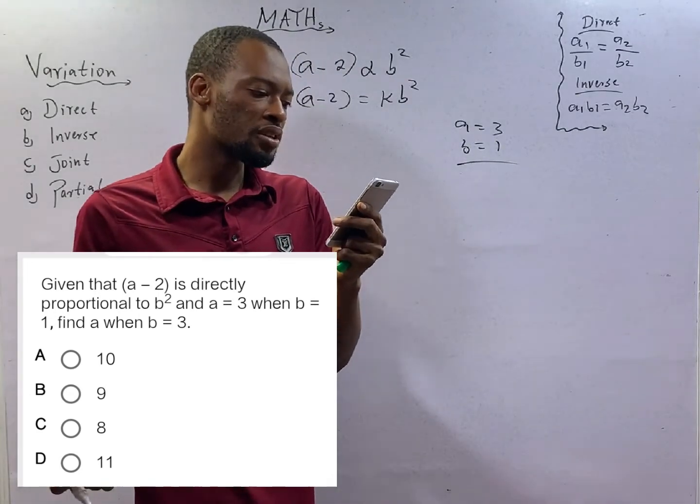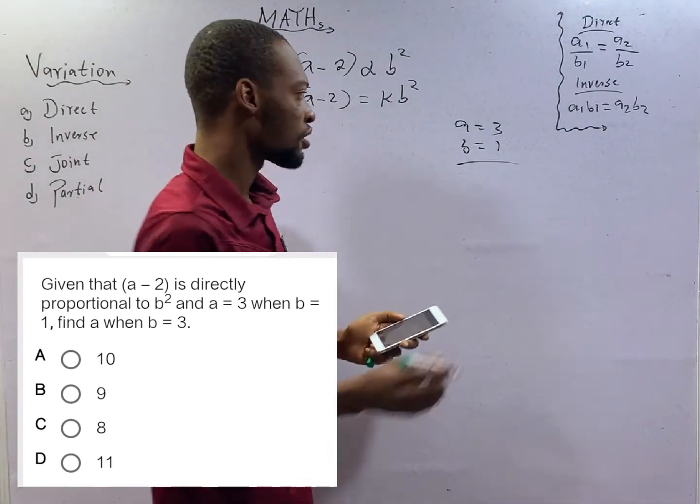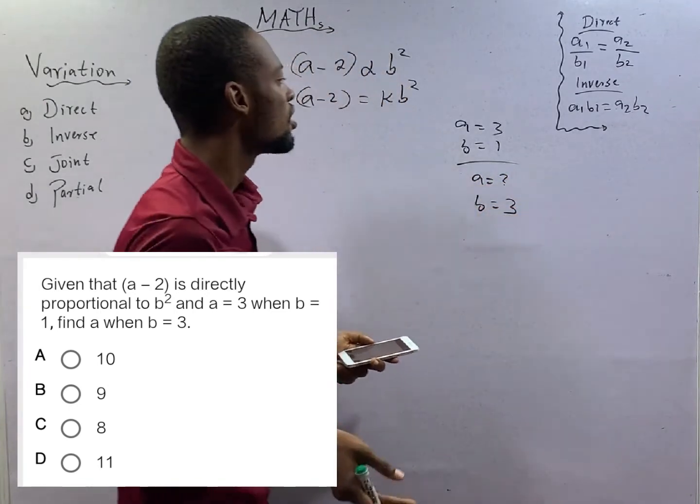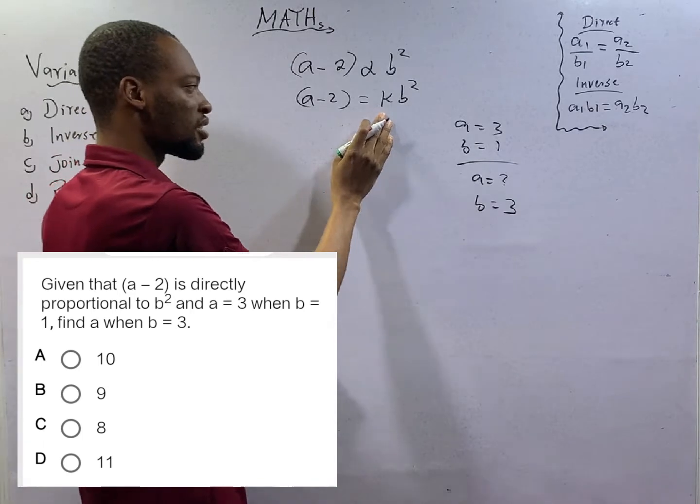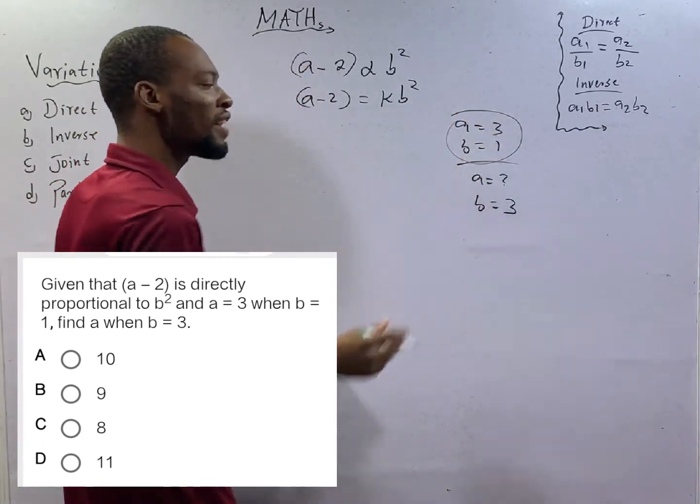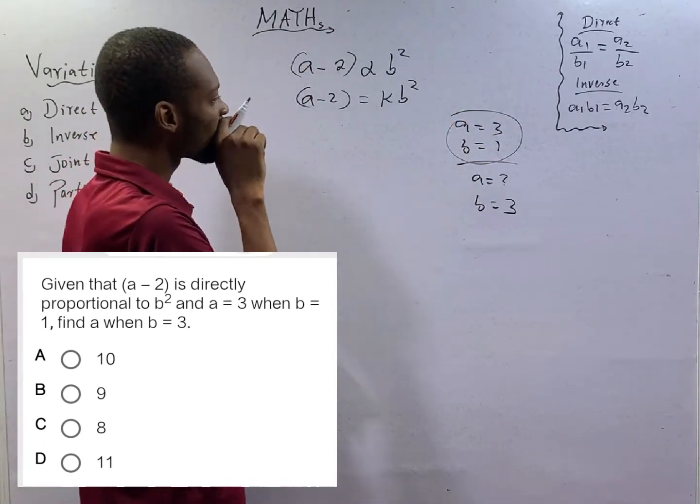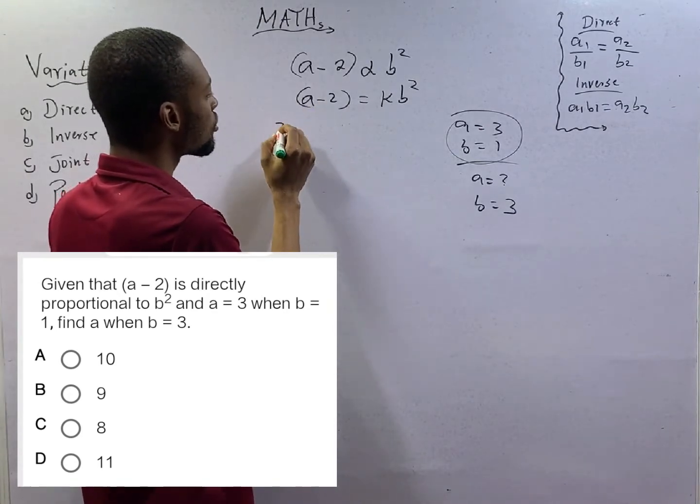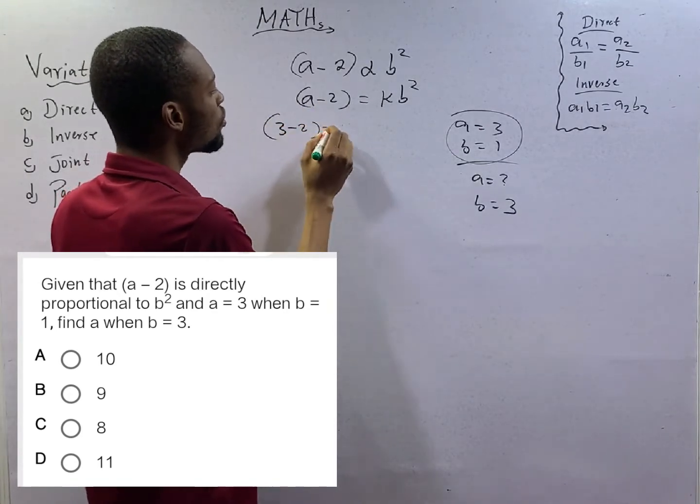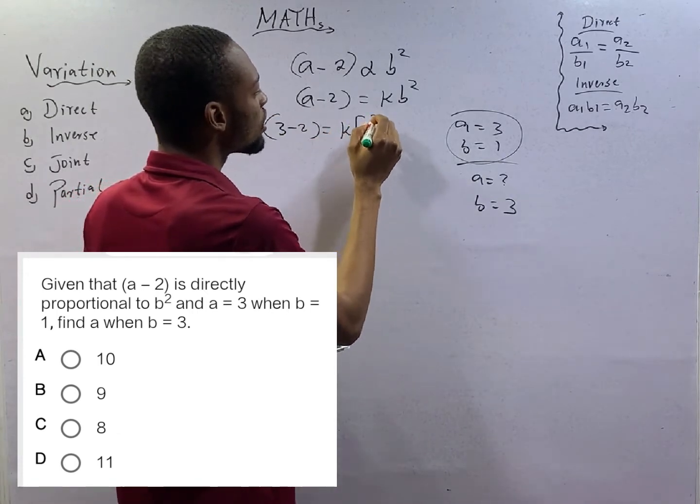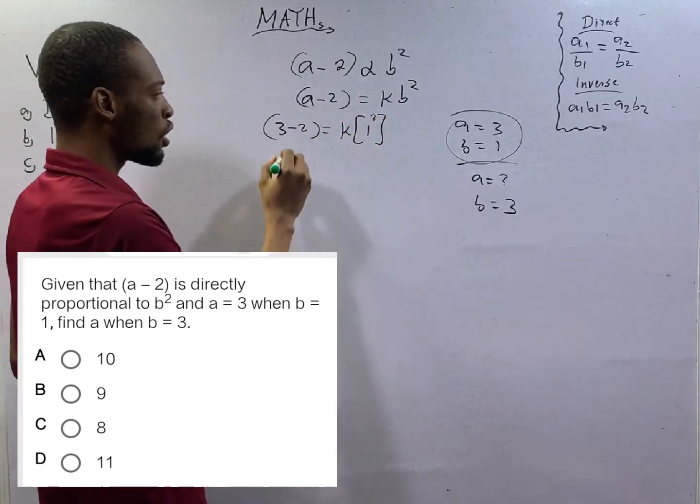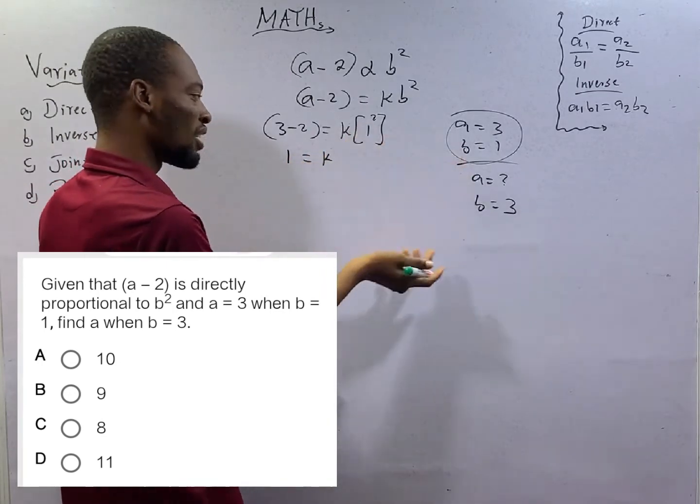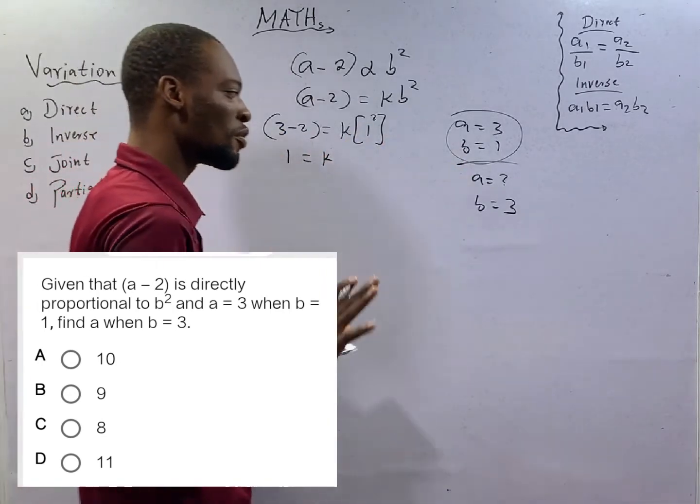Find a when b is 3. So a is equation when b equals 3. Let's look for the proportionality constant using the first values that we have. From here, a is 3. 3 minus 2 equals k times 1 squared. That is b squared. 1 equals k times 1. So constant equals 1.